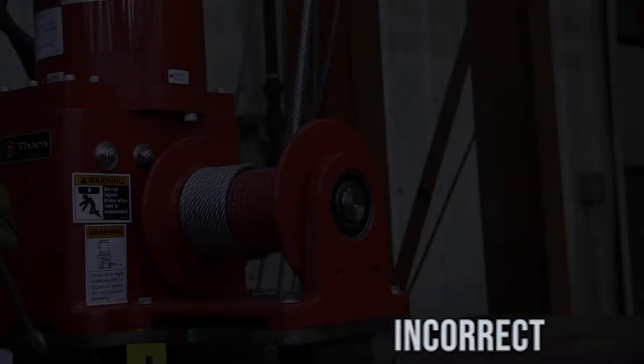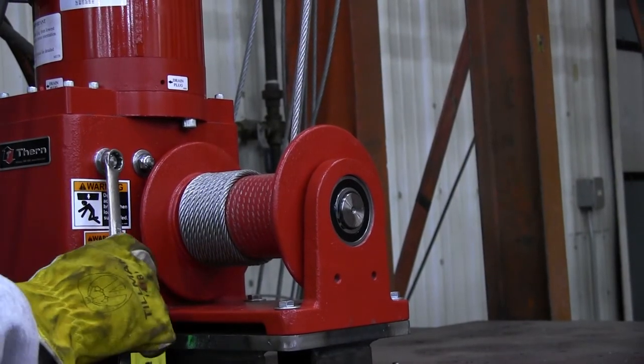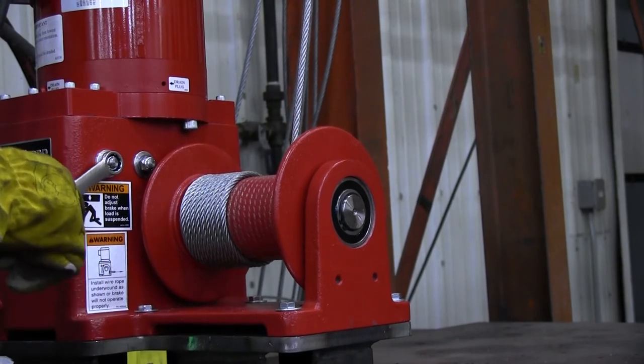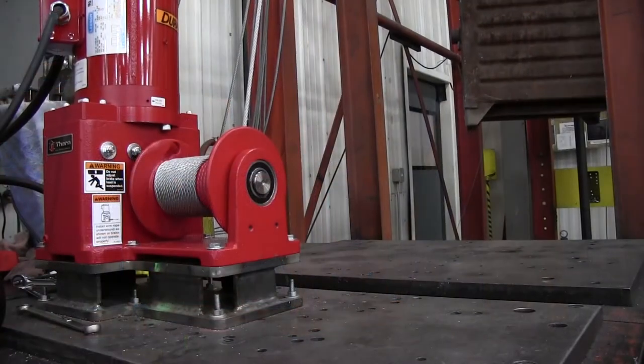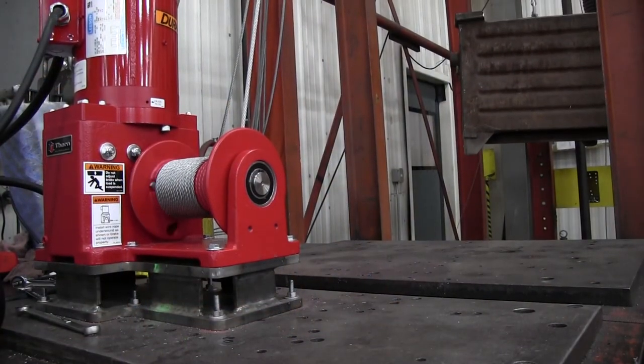Please note the brakes used in the Durahoyst and Atlas winches are adjustable to compensate for wear over time. To do this, simply tighten each of the brake adjusting nuts one quarter turn clockwise until you achieve acceptable drift.